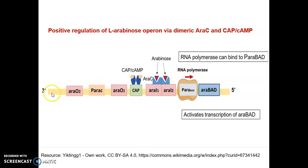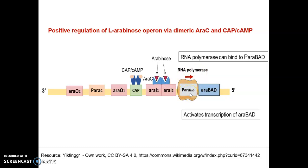Once araC switches to activator, the DNA returns to the linear form and the CAP site becomes available. The catabolite activator protein in association with cyclic AMP comes and binds, in turn stabilizing the binding of RNA polymerase. Cyclic AMP levels are high due to low or absent glucose. All these conditions favor the binding of RNA polymerase, which then transcribes the araBAD genes, activating transcription. This is how positive regulation of the arabinose operon occurs by the dimeric araC and CAP-cyclic AMP complex at the CAP site.